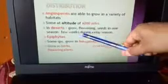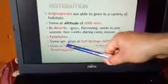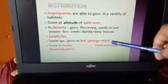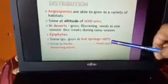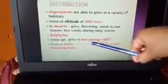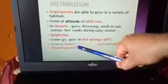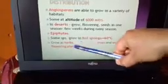There are also epiphytes, which grow on other plants. Various types of these Angiosperms grow on other plants. Some species grow in hot springs at about 60 degrees Celsius temperature. They grow as herbs, shrubs, bushes, trees, and small flowering plants in different groups with different habits.